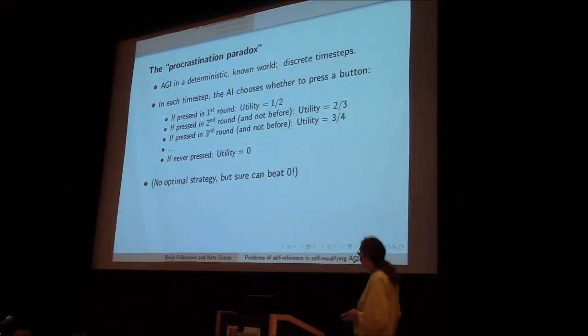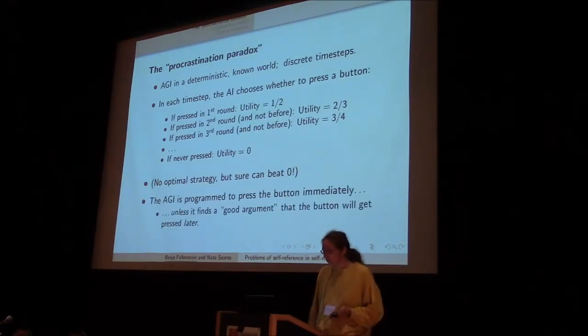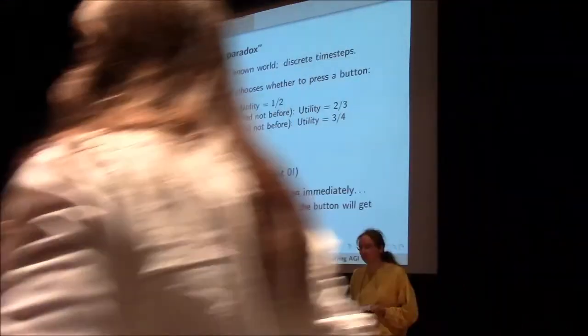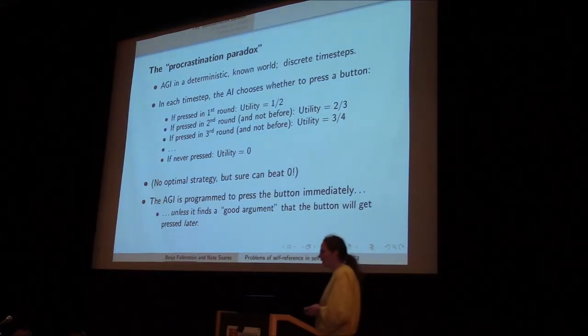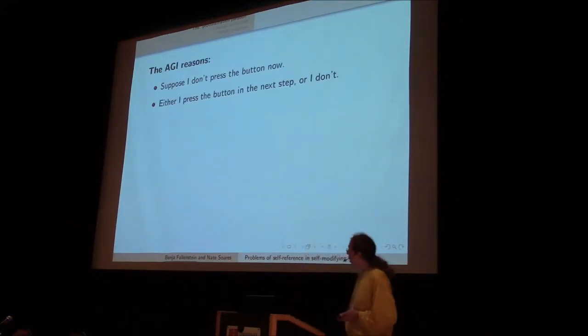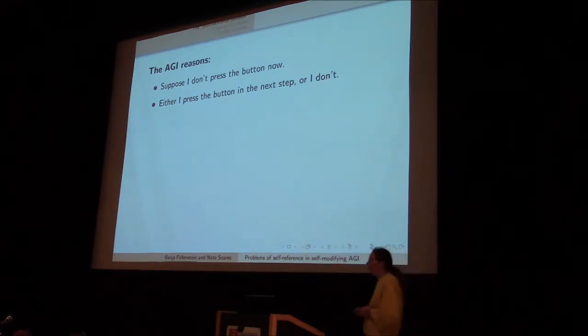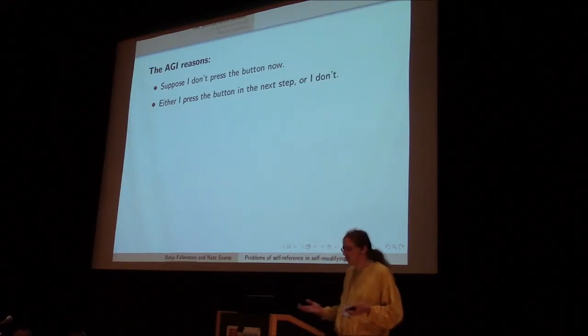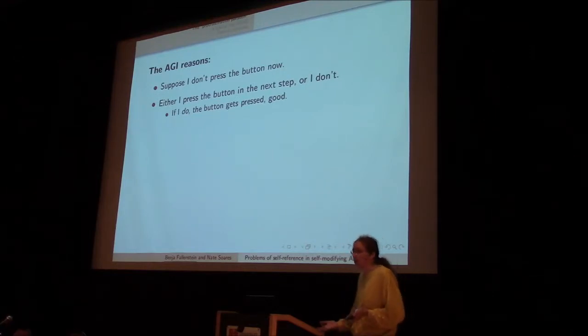So there's no optimal strategy here, but we can certainly do better than getting no points at all. And so we'll consider an AGI which is programmed to press this button immediately until it finds some sort of good argument that the button will get pressed later. And for the moment, we'll leave unspecified what good argument means in order to be general.